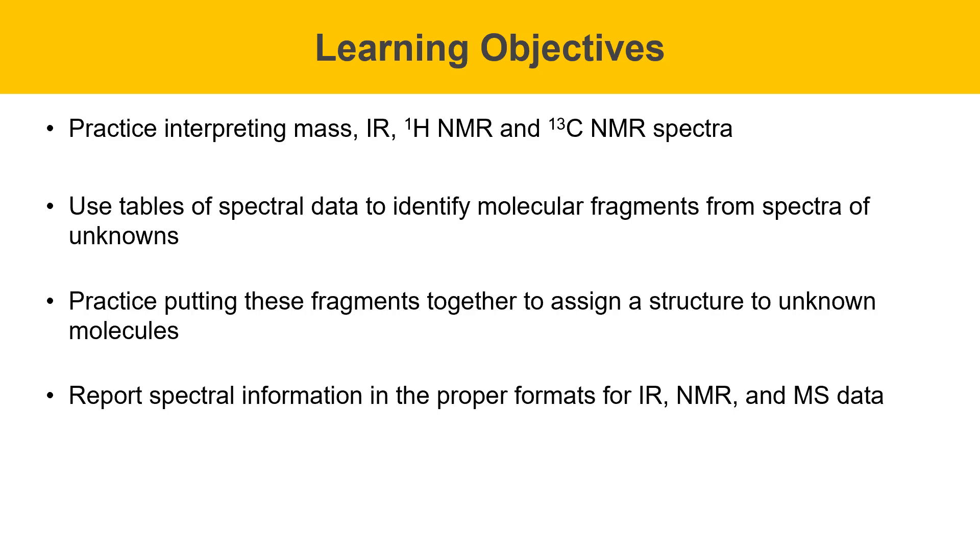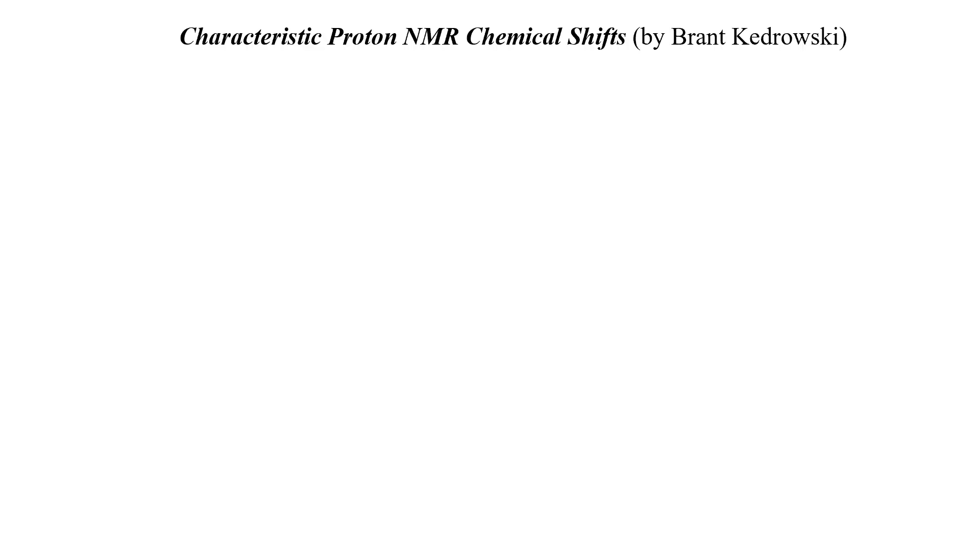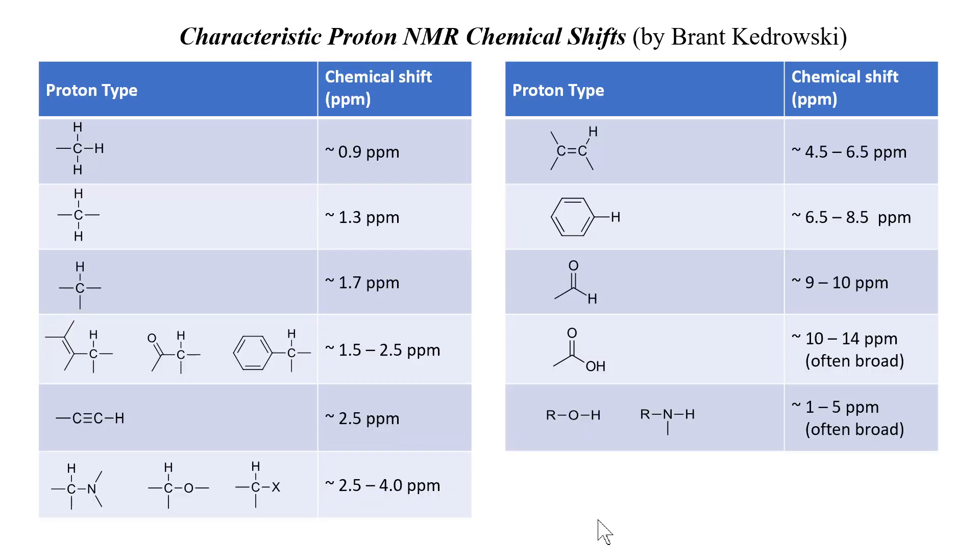Before we get into the unknowns, I want to go through some of the reference materials that you'll be given and should look at as you're going through and solving these unknowns. The first is a table of characteristic proton NMR chemical shifts. This is something I've made up for you to use. This table lists a variety of different protons in different kinds of chemical environments and the kind of chemical shift that they typically have.